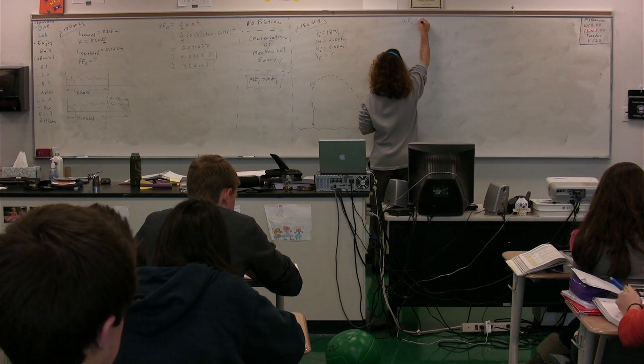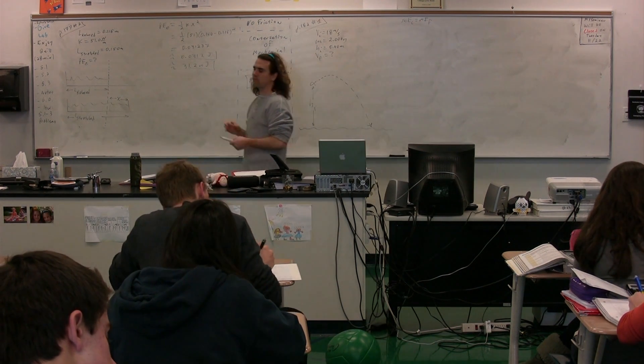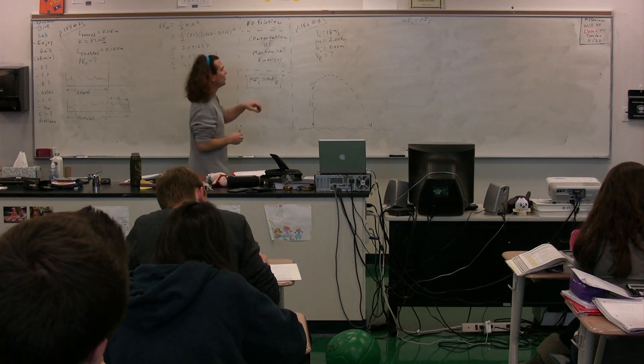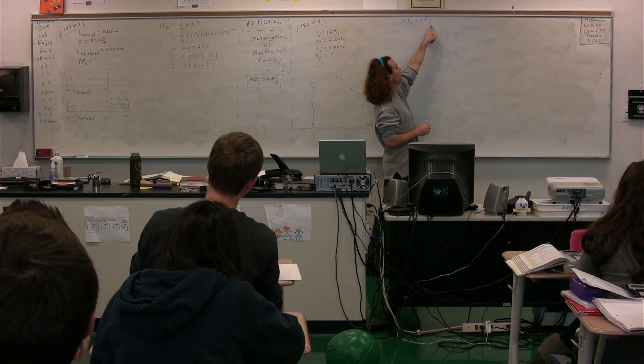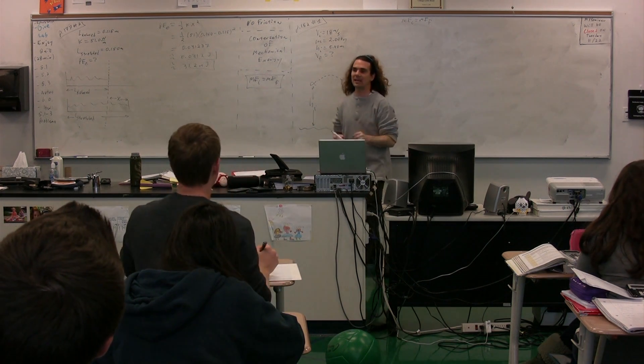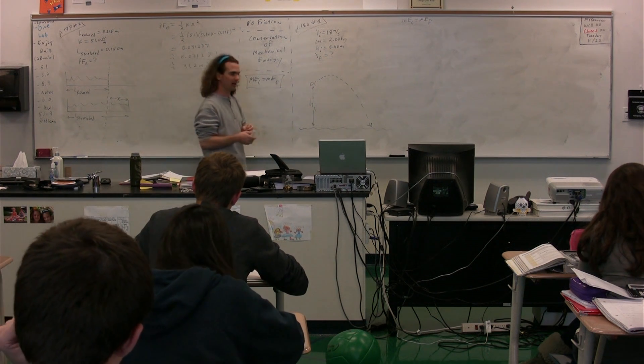So mechanical energy initial equals mechanical energy final. Whenever you are using this equation, before you can use the equation, you need to identify your initial point, you need to identify your final point, and you need to set a zero line. Because if you're going to talk about gravitational potential energy, you have to identify your zero line.